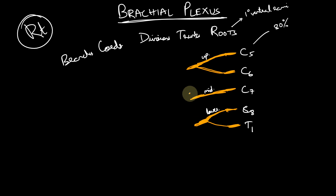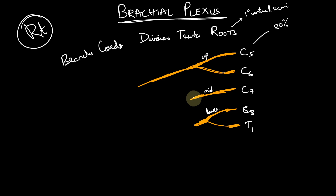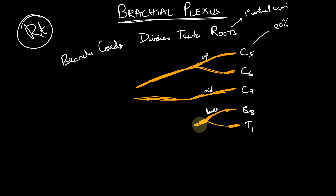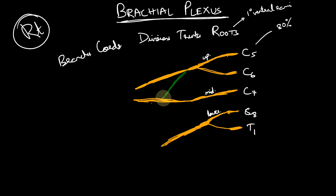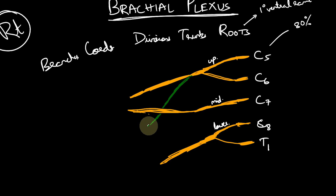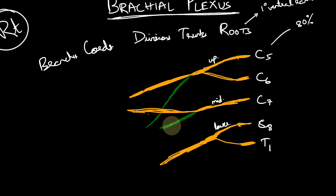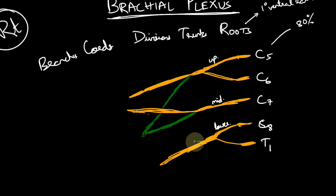All three trunks — upper, middle, and lower — divide into an anterior and a posterior division. Using orange for the anterior divisions: the upper trunk gives an anterior division, the middle trunk's anterior division converges toward the upper trunk's anterior division, and the lower trunk also gives an anterior division. The posterior divisions, shown in green, go more posteriorly — all three trunks give off posterior divisions.